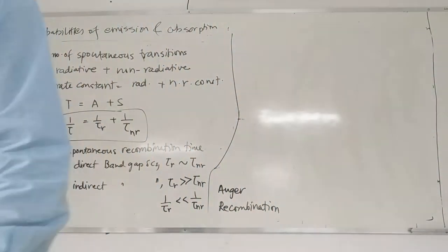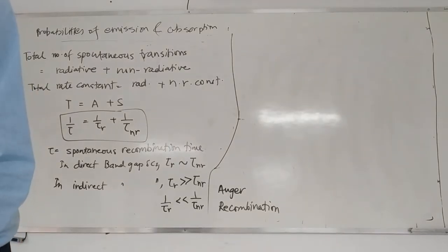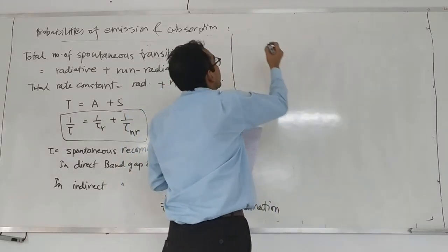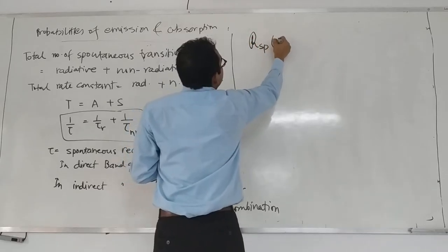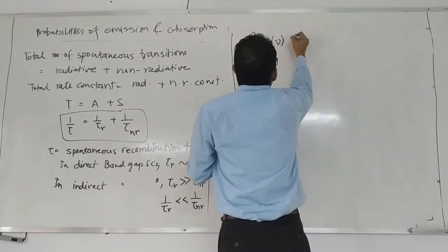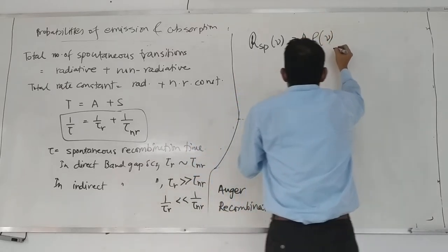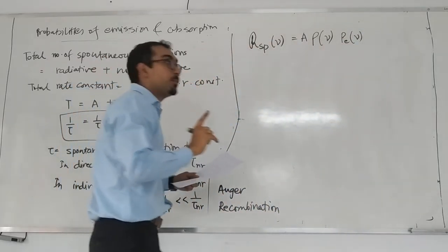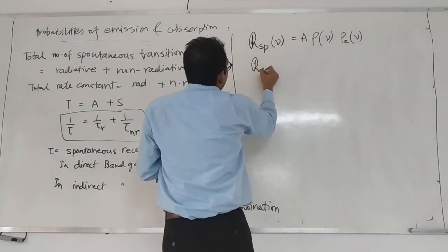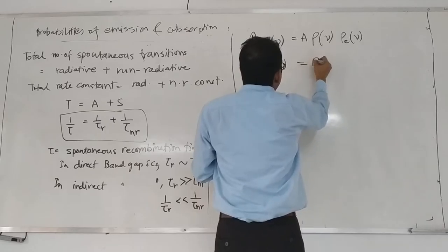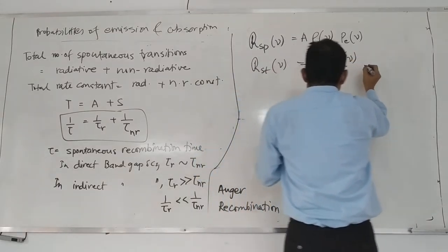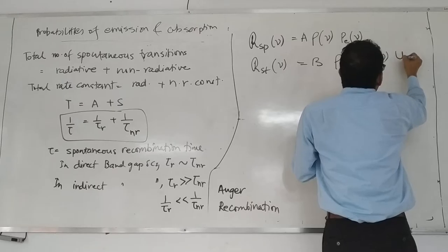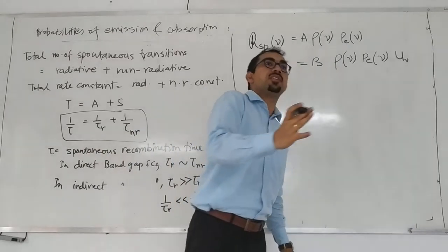We start again. So we have three processes: spontaneous emission — we write the rate of spontaneous emission, the density of states is the joint density of states, one has to keep this in mind — probability of emission, the rate of stimulated emission, this is another Einstein's proposition, and again probability of emission with an extra factor which is the intensity of incident photons.